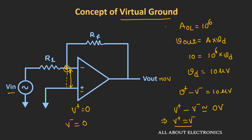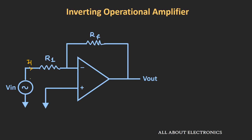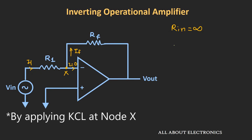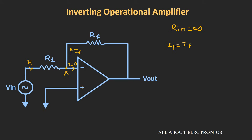Now let us use the virtual ground concept to derive the expression between Vout and Vin. Let the current flowing through resistor R1 be I1, and let node X be the inverting input node. Let the current flowing through resistor RF be IF. Since the op-amp has very high input impedance — for an ideal op-amp, input impedance is infinite — no current enters the op-amp, so the current I equals 0. This means I1 equals IF. We can write I1 as (Vin minus Vx) divided by R1, and IF as (Vx minus Vout) divided by RF.